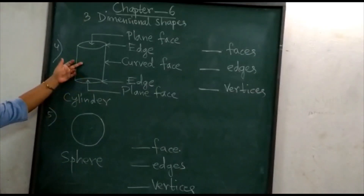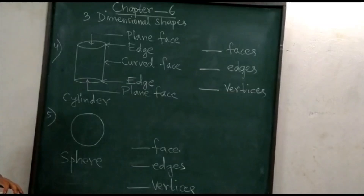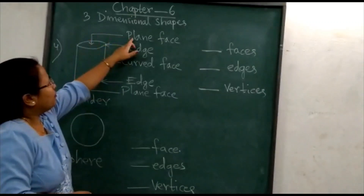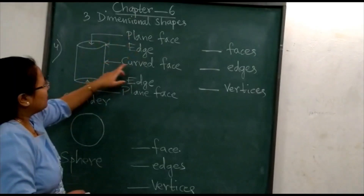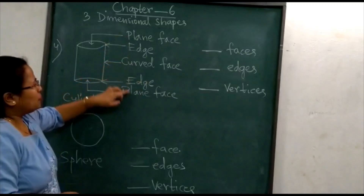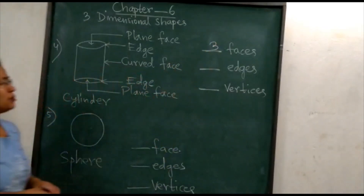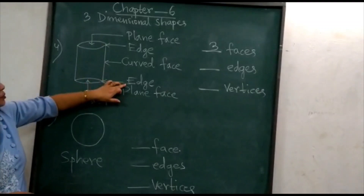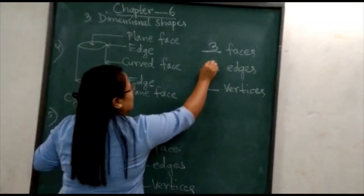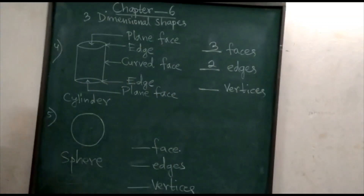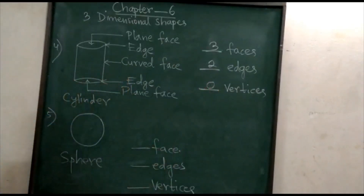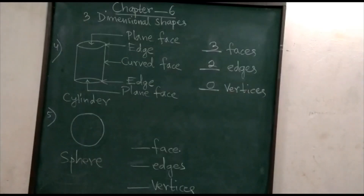Number four — cylinder. This is a cylinder. Let's find out the faces, edges and vertices of a cylinder. Faces: one flat face, two flat faces, and one curved face — three faces altogether. A cylinder has three faces. Edges: 1, 2 — two edges. Cylinder has two edges. Vertices: a cylinder does not have any vertices — zero vertices. A cylinder has three faces and two edges but no vertices.